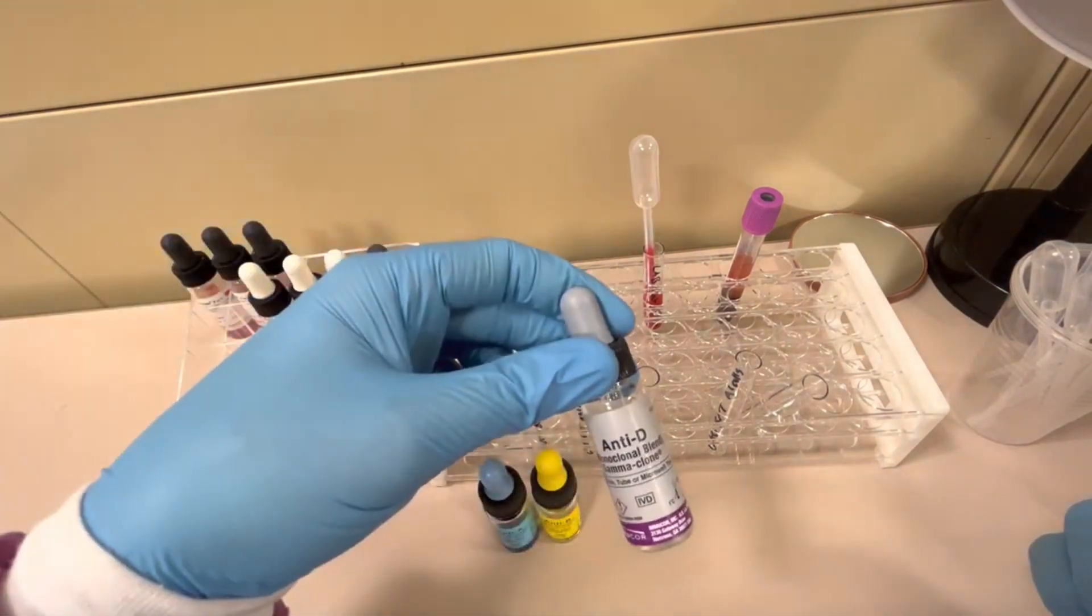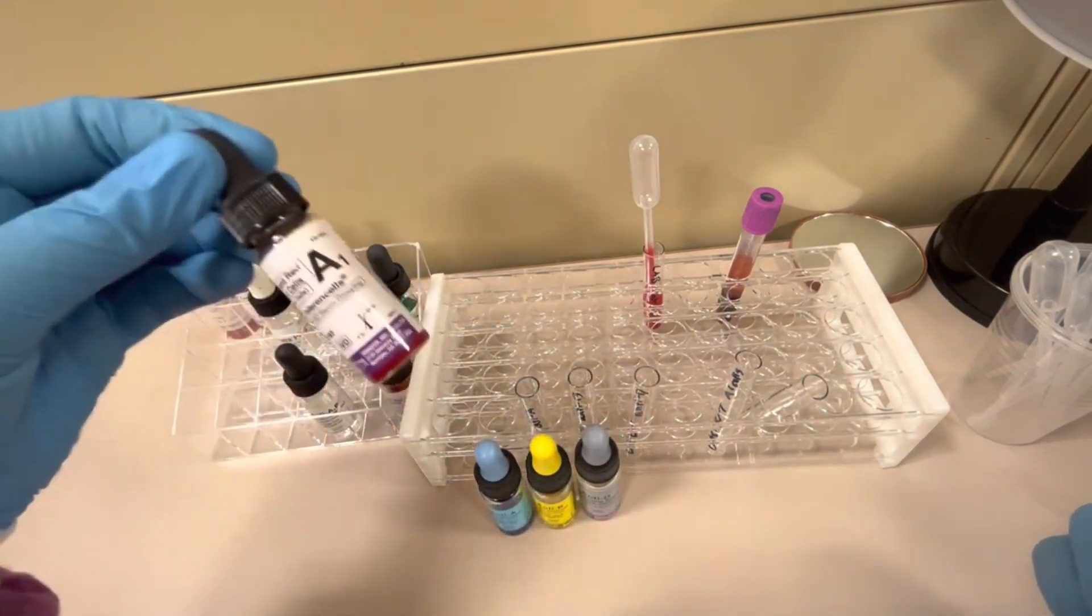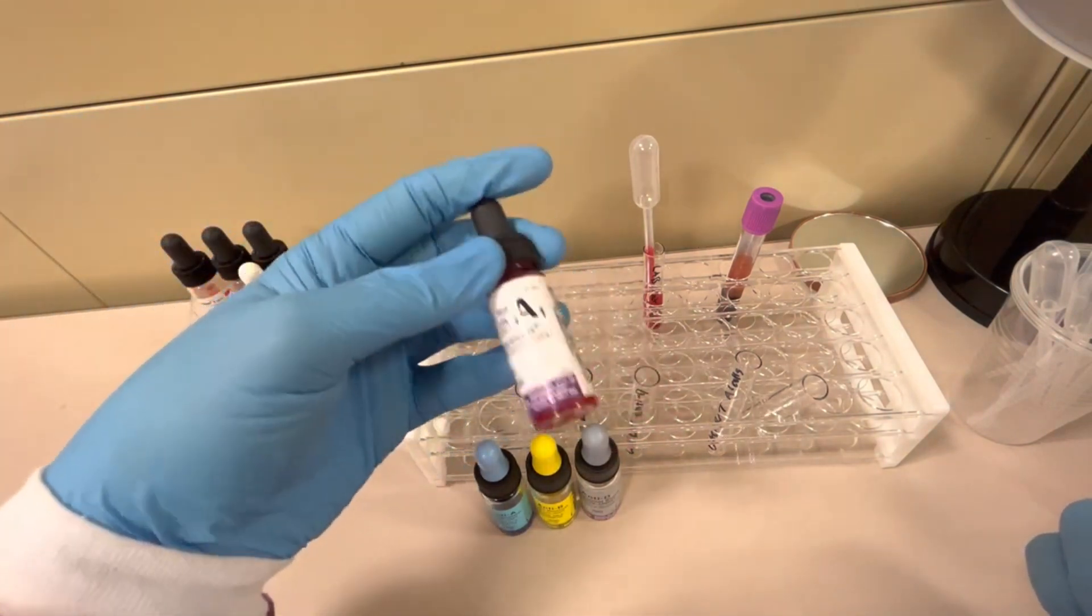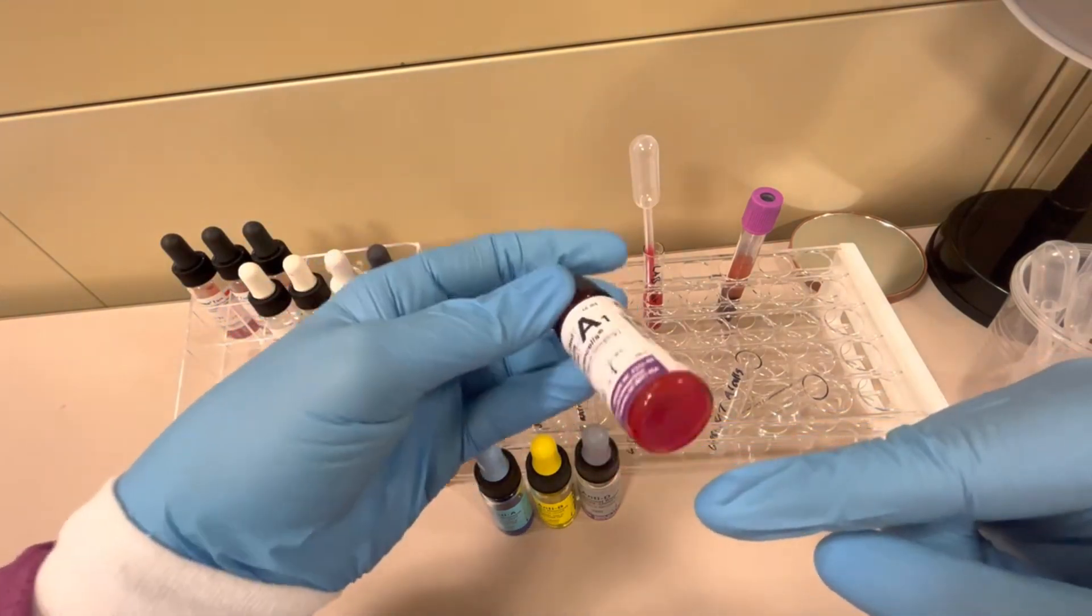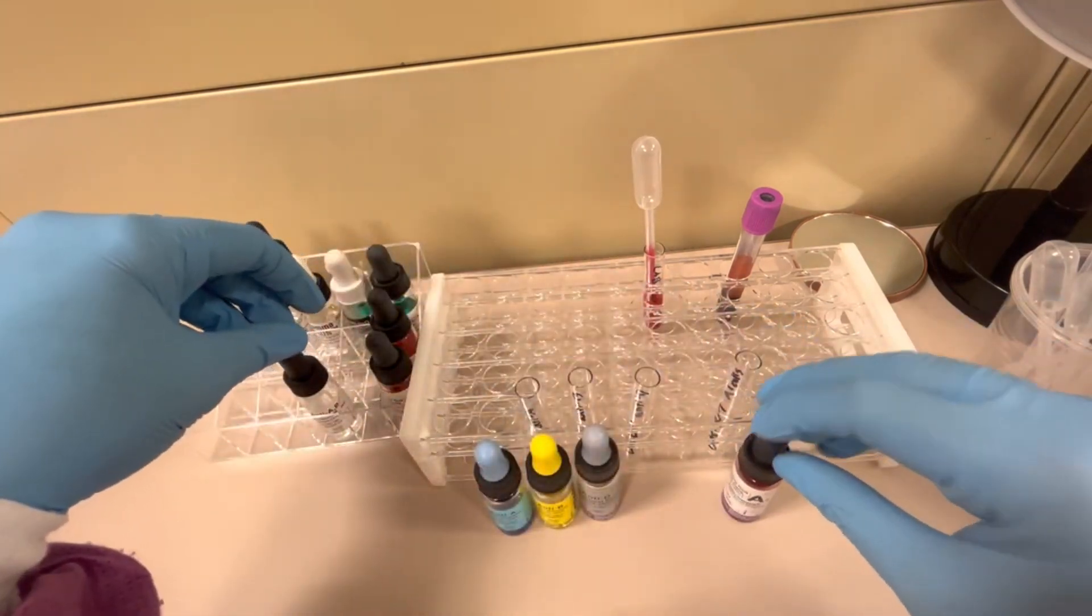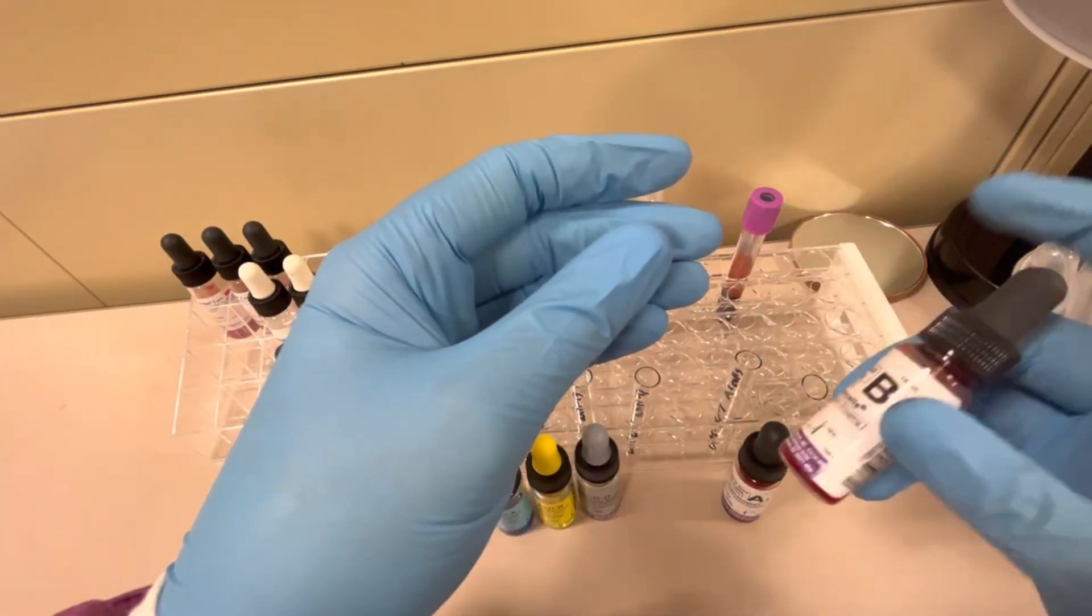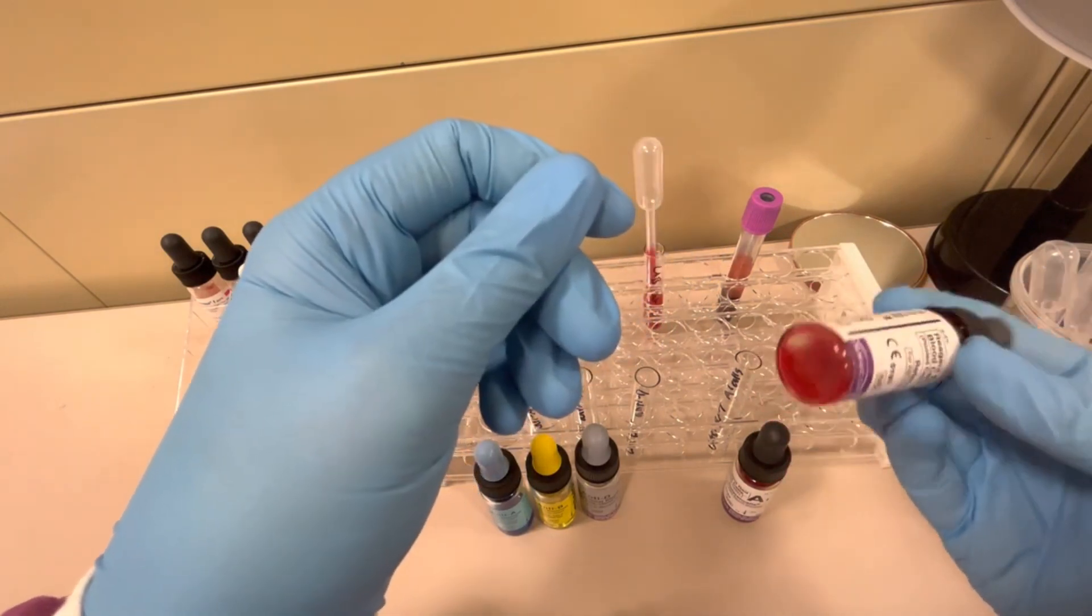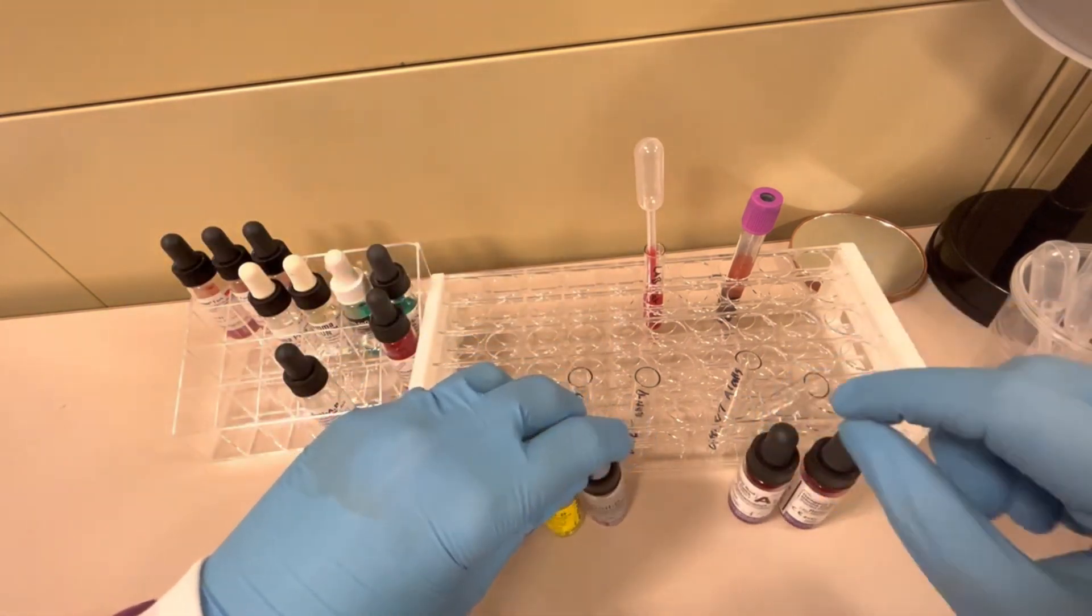Anti-D. These are going to be for my front typing, my forward typing. And then we have A1 cells. Notice that these are red blood cells, so we want to have these properly mixed so that all the red blood cells are off the bottom of this vial. We want to do that every single time. And then B cells. Again, these are red blood cells with known B antigen on them. We need to make sure that the red cells are off at the bottom.